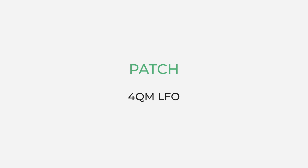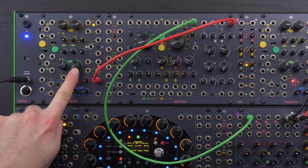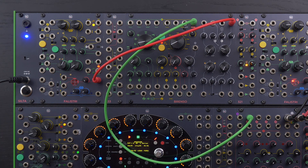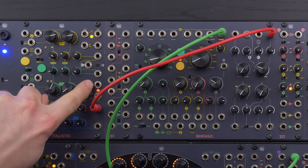Let's demonstrate the behavior of a four quadrant multiplier by varying the amplitude of an LFO with an envelope. In this patch we are taking advantage of Falistri's four quadrant multiplier and its semi-normalizations. We are using the green generator as a sawtooth-shaped LFO and the yellow one as an envelope to control it through the four quadrant multiplier. We don't need to patch anything to the inputs since they are semi-normal to the yellow unipolar out and the green bipolar out respectively.